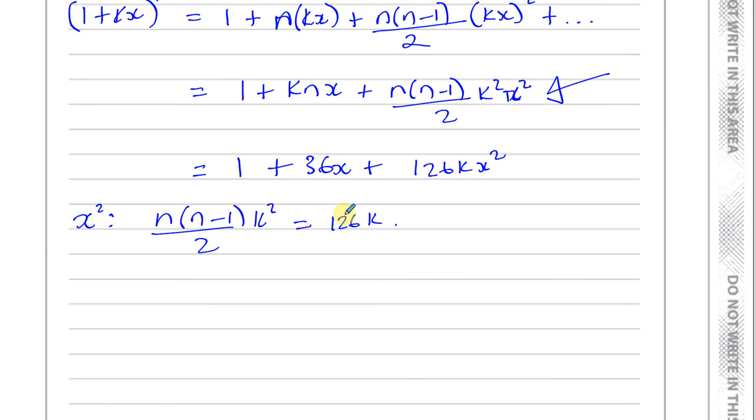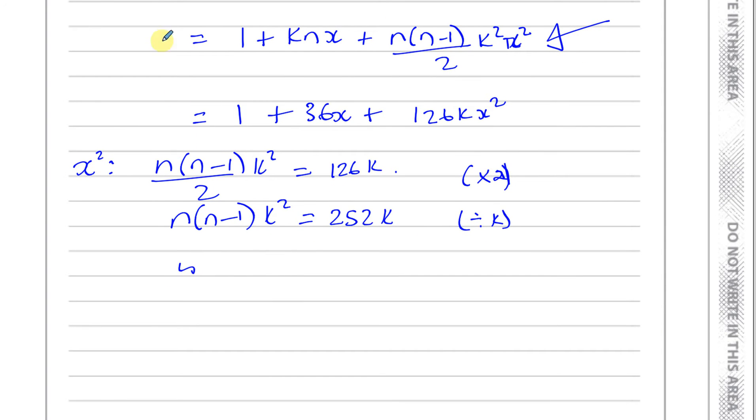Okay, and we have to show that that becomes nk times n minus 1. So basically here, if we multiply both sides by 2, we'll have n times n minus 1 times k squared equals 2 times 126, which is 252 times k. And if we divide by k, we can divide by k because we know that it's a non-zero constant. If we divide by k, we'll be left with n times n minus 1 times k equals 252.